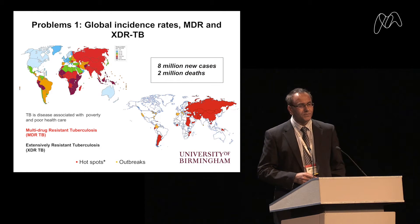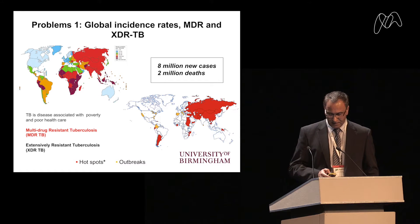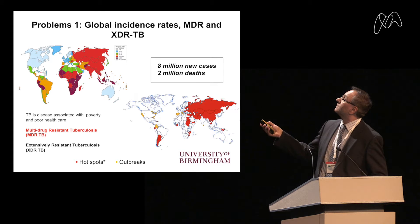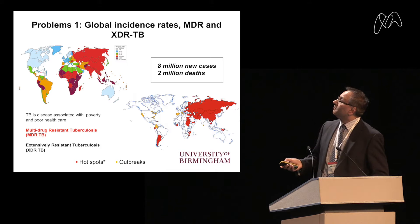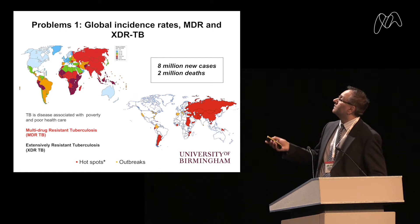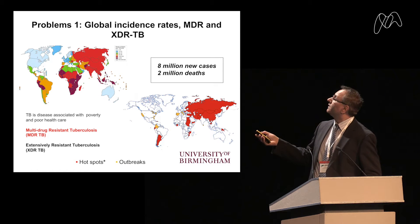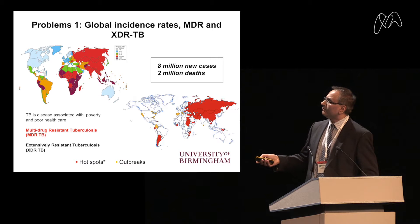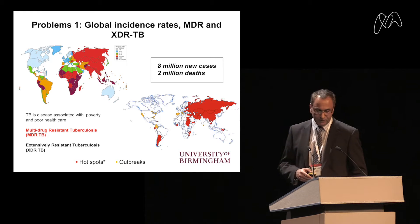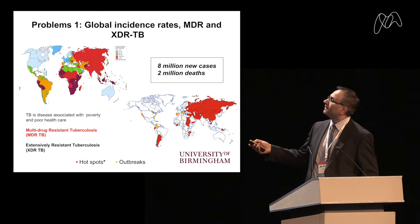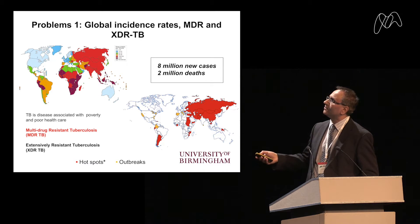If we think about the problems of tuberculosis, there are several factors. Looking at the global incidence rates and MDR and XDR TB, there are around 8 million new cases attributed to tuberculosis every year, and around 2 million deaths associated with the disease. TB is really associated with poverty and poor healthcare, which is reflected in high case rates and deaths in South America, Africa, and parts of Asia.